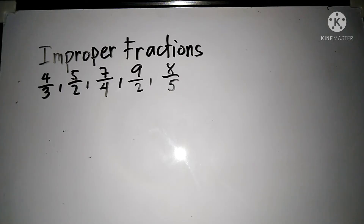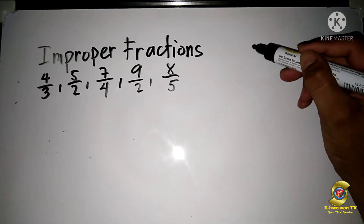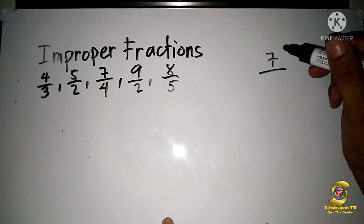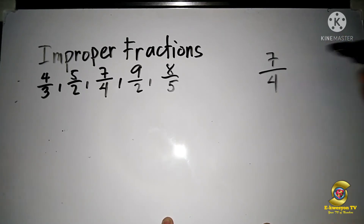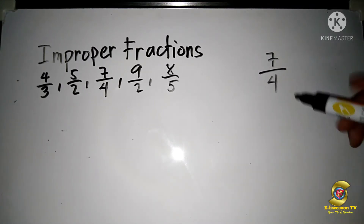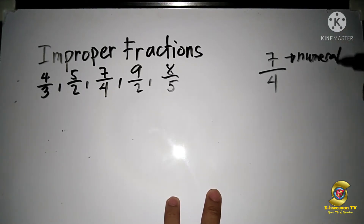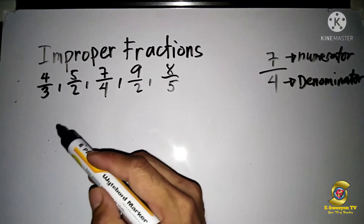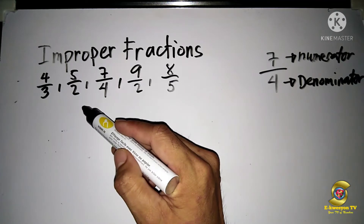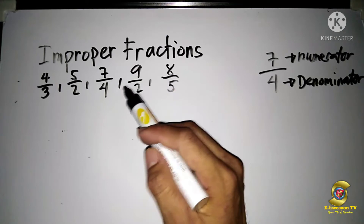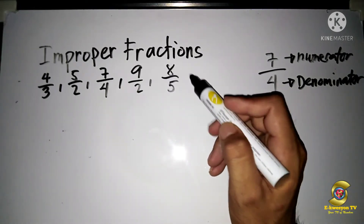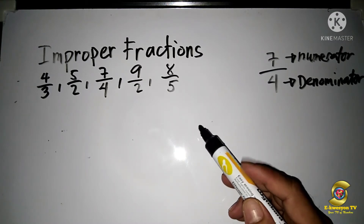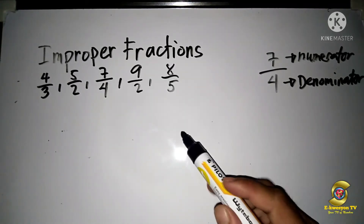Before we proceed to our next topic, which is converting improper fractions to mixed numbers, let's define improper fractions. Improper fractions are fractions where the numerator has a bigger value than the denominator. For example: four over three, five over two, seven over four, nine over two, and eight over five — all fractions where the numerator is bigger than the denominator.